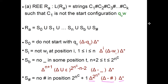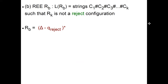The second case is RB, for strings such that CK is not a reject configuration. Here you can just have RB be (delta minus q-reject) star — meaning you do not have the q-reject symbol anywhere.